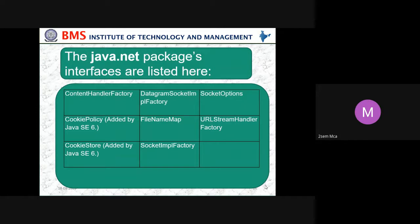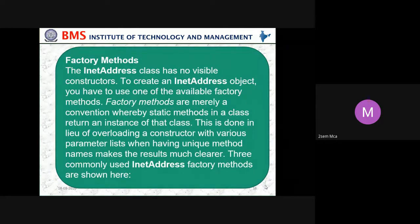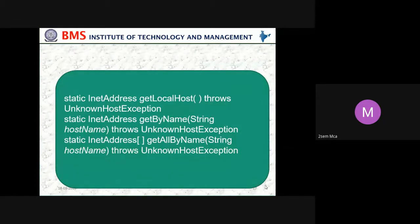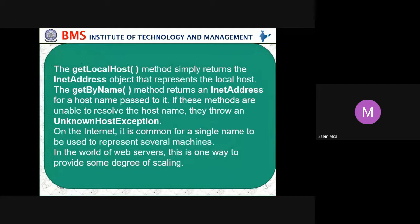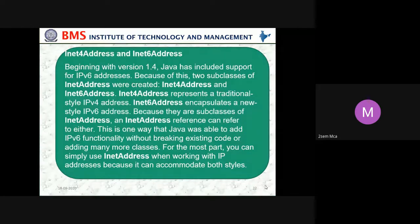These are the different packages available in the java.net header file, and within this we have interfaces. For internet addresses, IPv4 or IPv6, the factory methods generally used are getLocal, getName, getByName, or getAll. There are also different instance methods available for various cases. Earlier when Java was an older version, they used InetAddress. Now because IPv6 has changed, they started using Inet6Address.